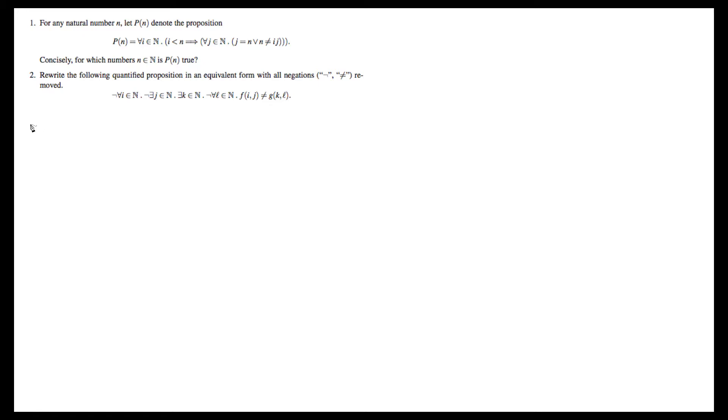So let's get started with P of n is false. We know that P of n is false if not the statement P of n is true. This is equivalent to there exists some i in n such that, and let's just for simplicity call this Q of n and i. So this is not Q of n i, and this is just using the standard rules of how to negate with quantifiers. So we know that P of n will be false if we can find an i for which Q of n i is false.